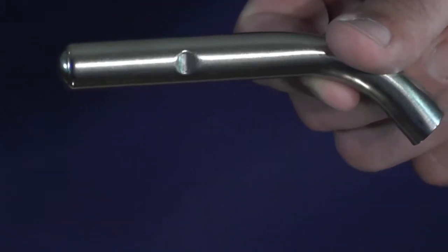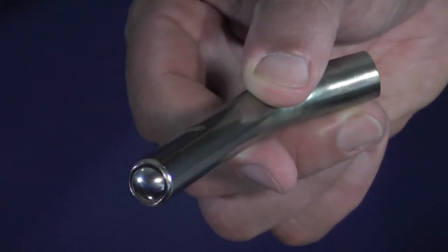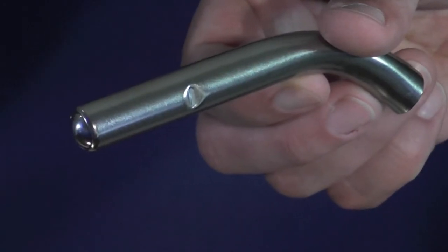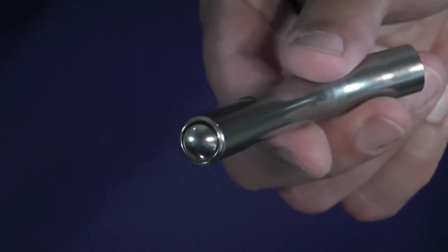Also available are ball water tubes with either a standard or reinforced tip. They come in a range of sizes and are ideal for use with dogs, pigs, rabbits, primates, or other large animals.